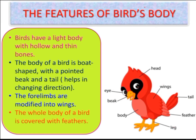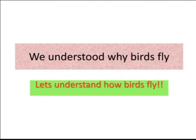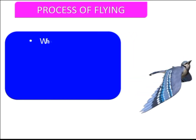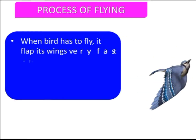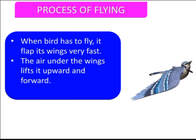So these are some features of the bird's body and its body parts. We will see different types of birds in this session. Till now we have understood why birds fly — because of their body shape and the features in the body. Now let's understand how birds fly: the process of flying. When a bird has to fly, it flaps its wings very fast.